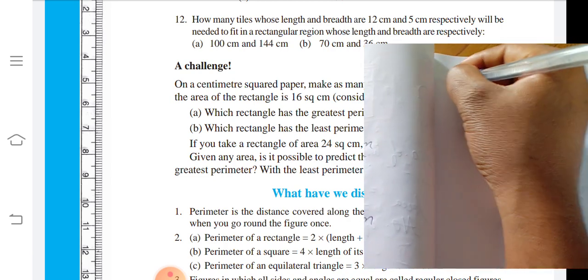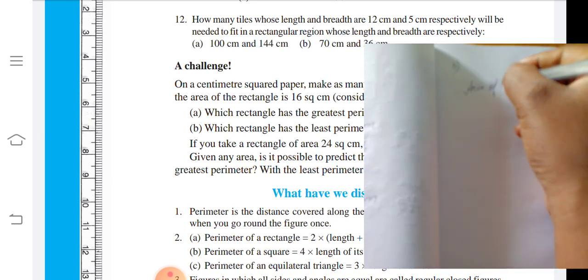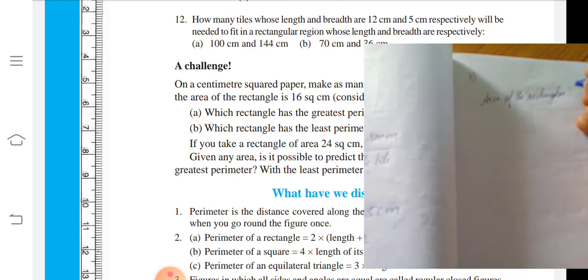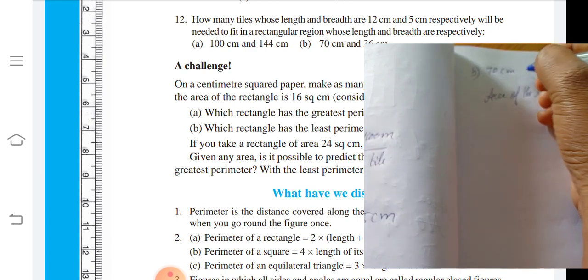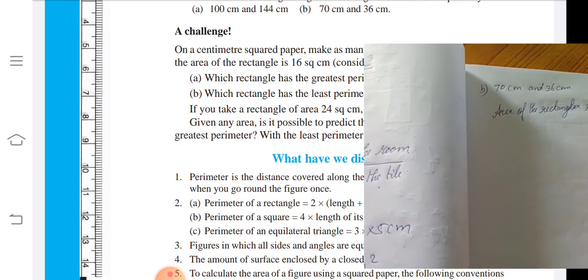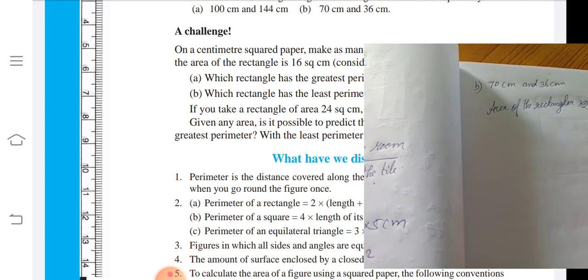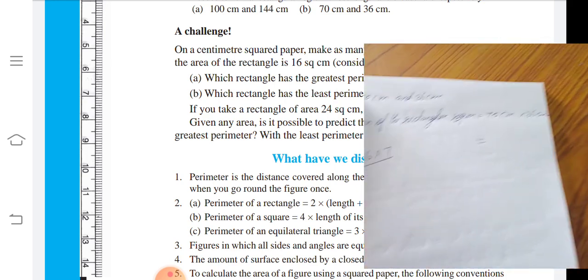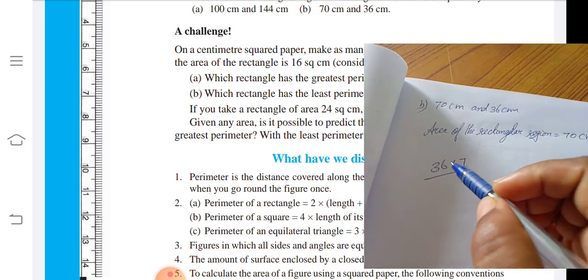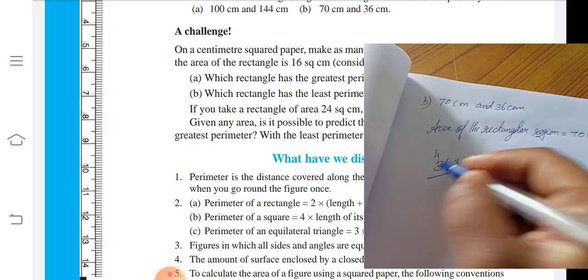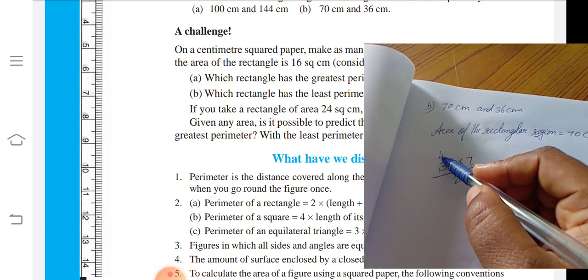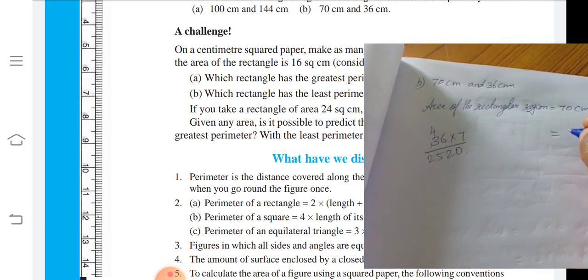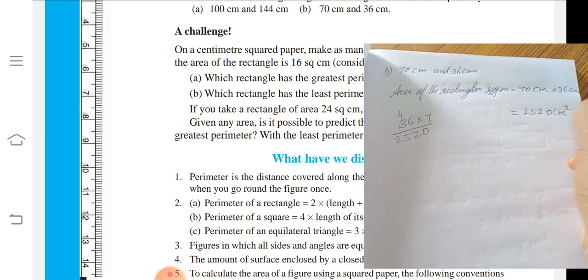Next, part B. Area of the rectangular region equals the measurements: 70 centimeters and 36 centimeters. So 70 centimeters multiplied by 36 centimeters. 36 into 7: 6 times 7 is 42, 7 times 3 is 21, 21 plus 4 is 25. So 2,520 centimeter square.